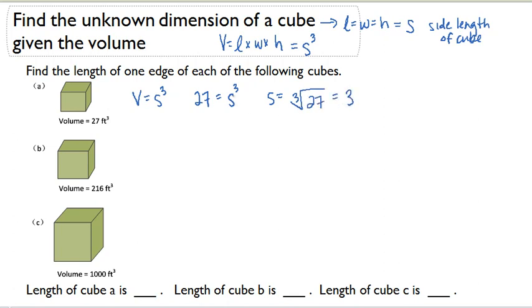Or what number multiplied by itself two times gives us 27? Well, 3 times 3 times 3 does equal 27. So that's how I figured out 3. 3 is the side length of my first cube. And I'm actually going to put feet there because I don't want to forget my label.